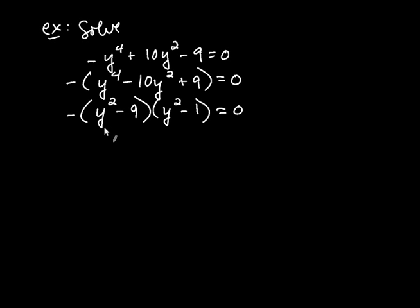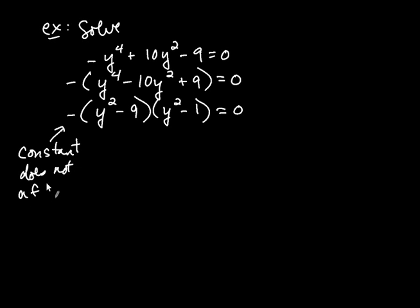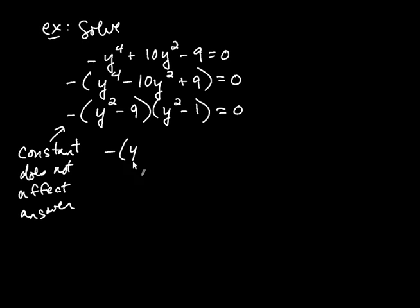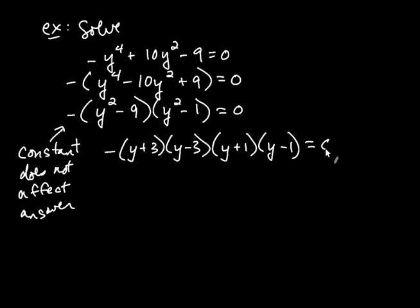We want to set these factors equal to zero. There's a negative 1 constant here — it turns out that a constant does not affect your answer. So once you have zero on the right-hand side and the left-hand side is a product, you can ignore any constant factor. But you do have to keep factoring: y squared minus 9 factors as y plus 3 times y minus 3, and y squared minus 1 factors as y plus 1 times y minus 1. So we get negative times y plus 3 times y minus 3 times y plus 1 times y minus 1 equals zero. Always factor as far as you can.